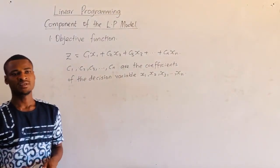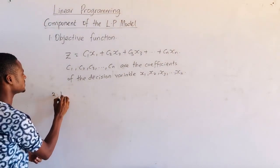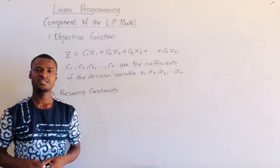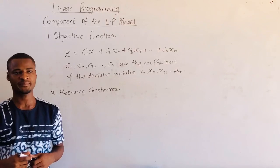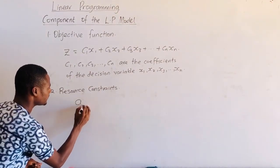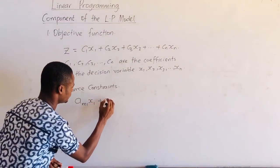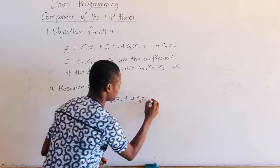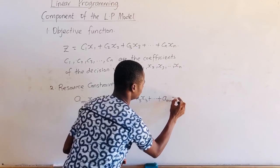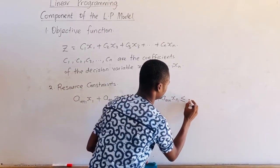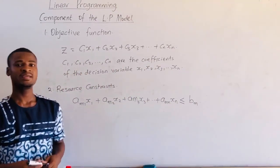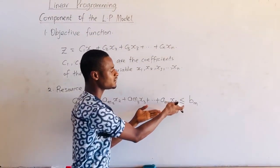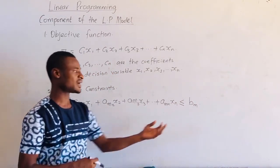The next component of the linear programming model is the resource constraints. We must realize that BM is the resource constraint, and this simply means that all the resources put together are less than or equal to the constraint. It cannot be greater than the constraint of the resources.